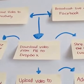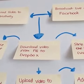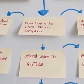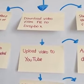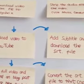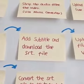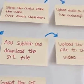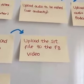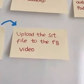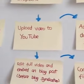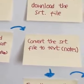Then what you do is download the video from Facebook and put it in your Dropbox. From there you upload the video to YouTube, add subtitles, and download the SRT file. Then you upload the SRT file back to the Facebook video or Facebook Live that you've already done.